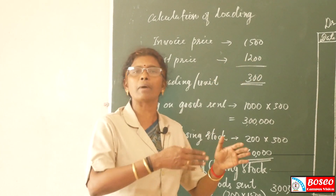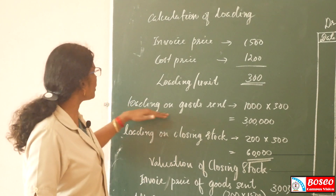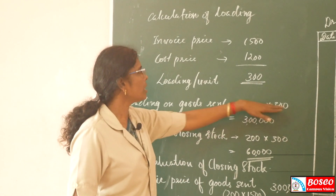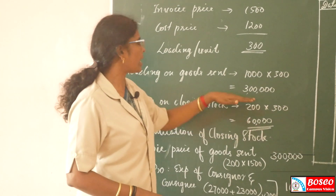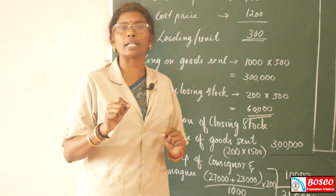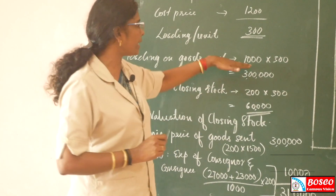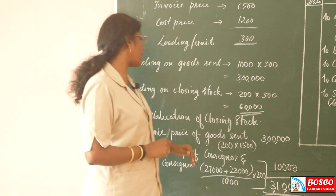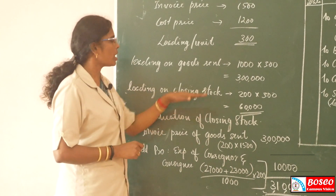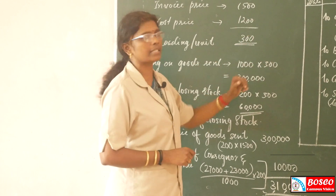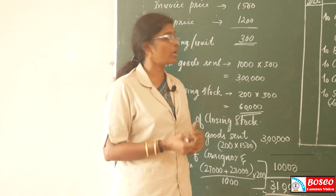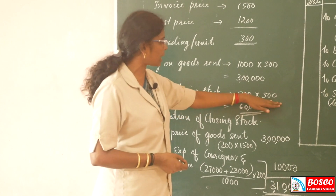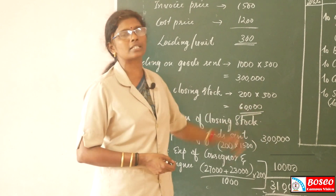One unit loading is Rs.300. So loading on goods sent: 1000 units into Rs.300 per unit equals Rs.3,00,000. Loading on closing stock: 1000 units were sent and 800 units are already sold, so unsold units are 200 units. 200 units into loading per unit of Rs.300 equals Rs.60,000, which is the stock reserve — loading on closing stock.